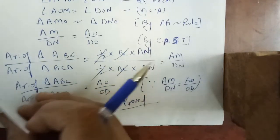One more question I will explain — question number 5. D, E, F are respectively the midpoints of sides AB, BC, and CA of triangle ABC. Find the ratio of area of triangle DEF to area of triangle ABC.